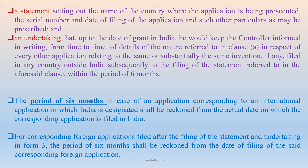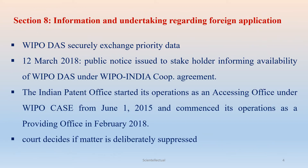The period of 6 months in case of an application corresponding to an international application where India is designated shall be counted from the actual date on which the corresponding application is filed in India. For corresponding foreign applications filed after filing Form 3, the period of 6 months will be counted from the date of filing of the said corresponding foreign application. The period of 6 months for applications corresponding to an international application designating India shall be recorded from the actual date on which the corresponding application was filed in India.